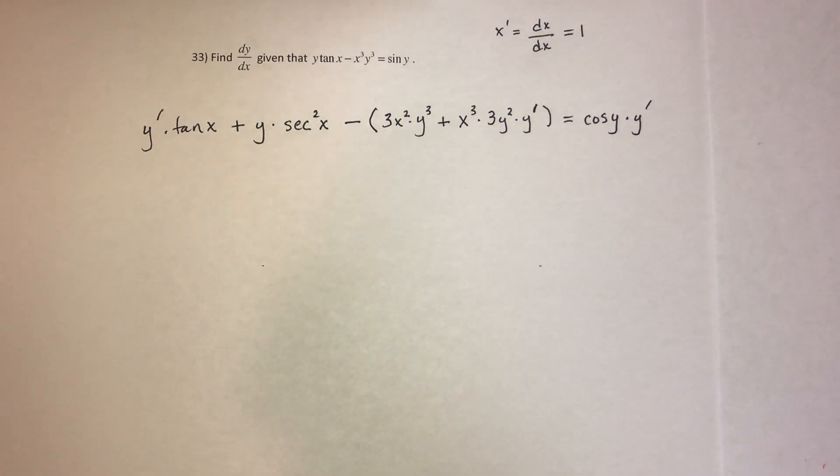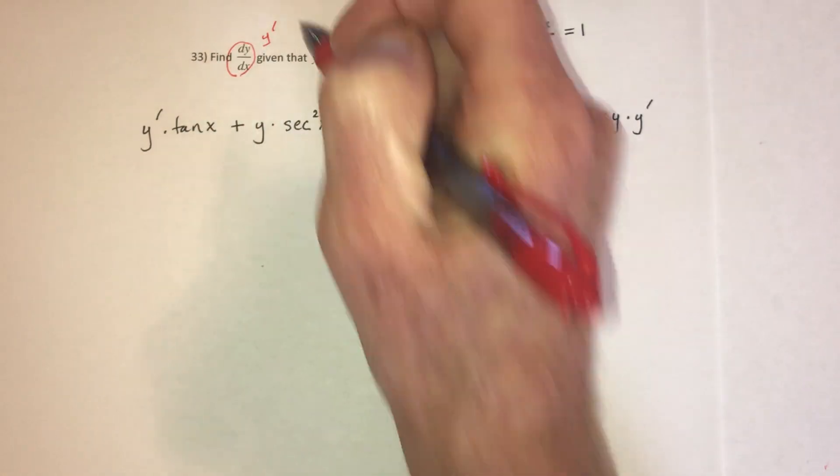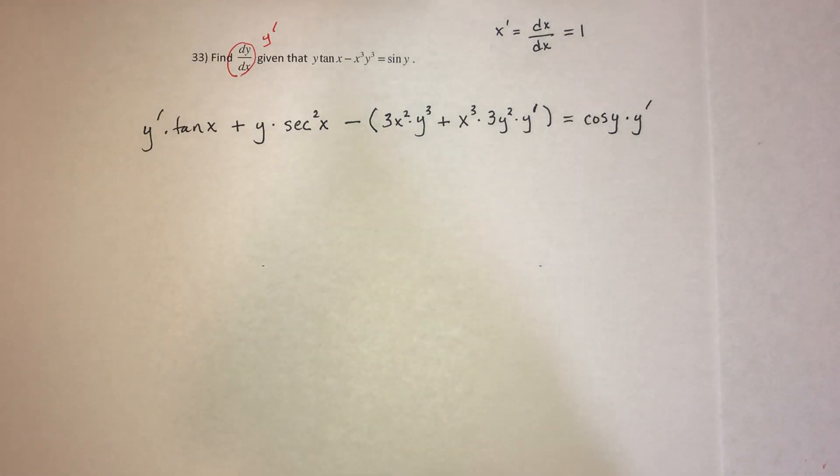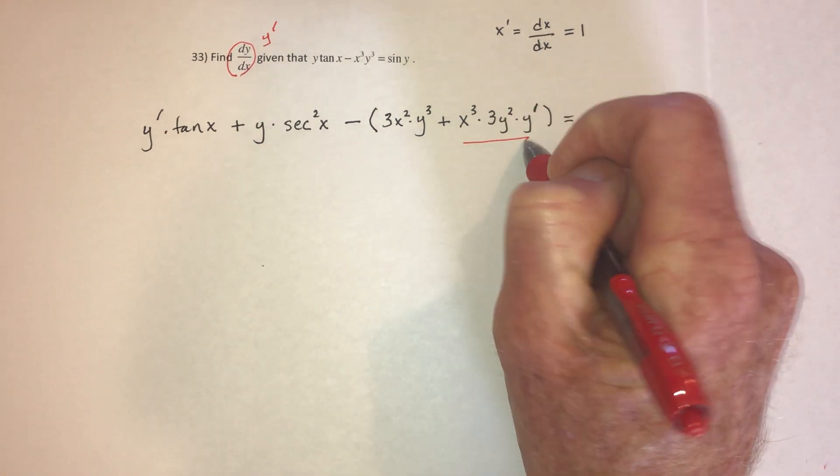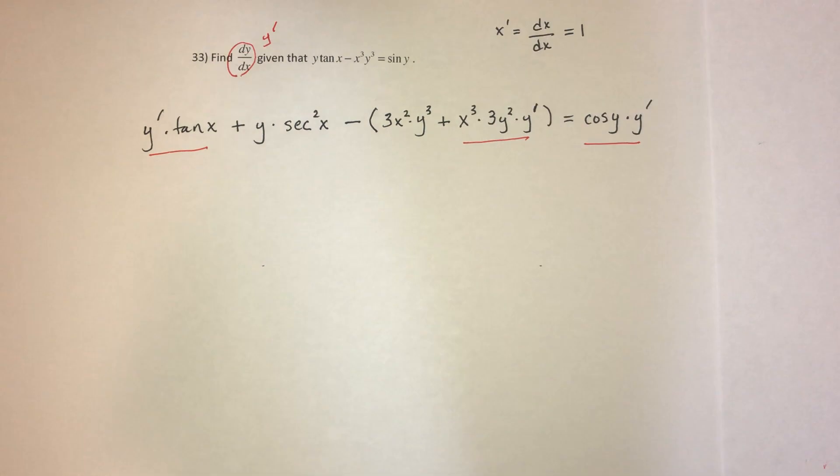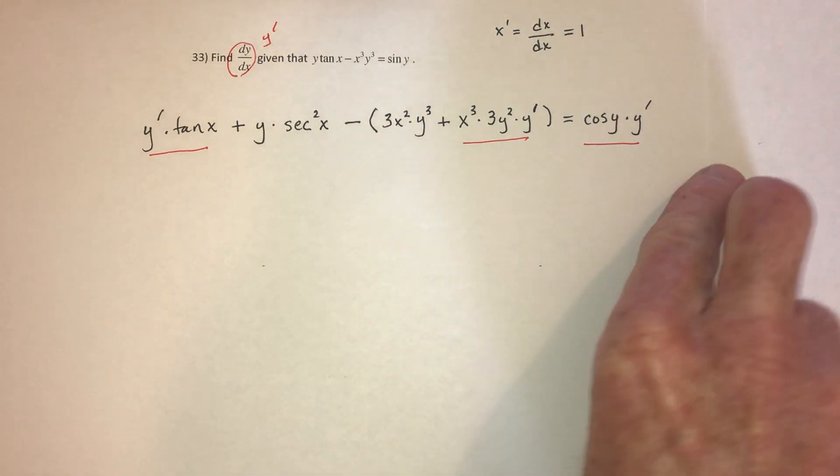Now that's all well and good, but we need to solve for dy/dx, or in other words, we need to solve for y prime. So everything that has a y prime, we need to put all of those terms on one side. And if it doesn't have a y prime, it needs to go to the other side.